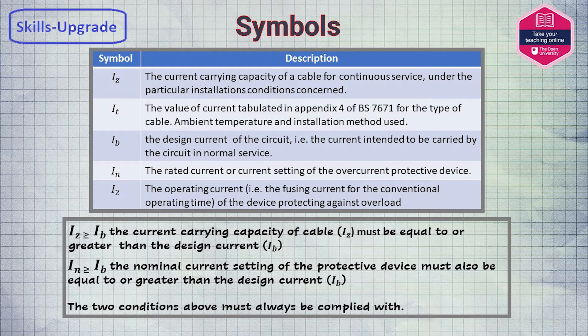IB is the design current of the circuit, i.e. the current intended to be carried by the circuit in normal service. IN is the rated current or current setting of the overcurrent protective device. And I2 is the operating current of the device protecting against overload.